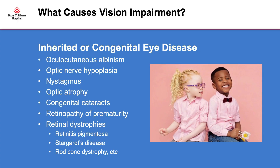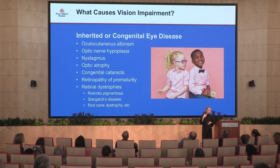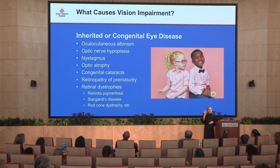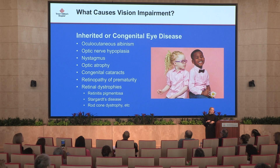So what causes vision impairment? This is a picture of twins — one of them has oculocutaneous albinism. Sometimes we can get an idea about whether a child will have a vision impairment just by looking at them. Oculocutaneous albinism being the most prominent: fair skin, fair eyes, very little pigment in the eyes, lightly colored hair, and usually nystagmus or shaking of the eyes. We also frequently see kids with optic nerve hypoplasia, optic atrophy, and congenital cataracts.